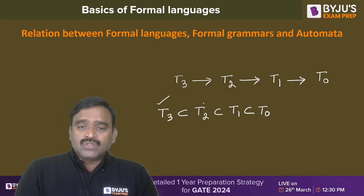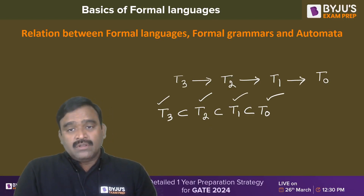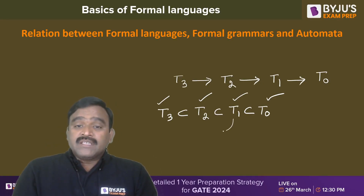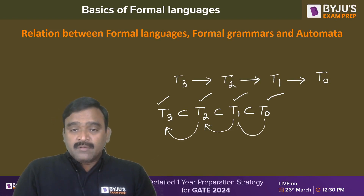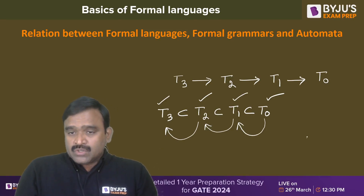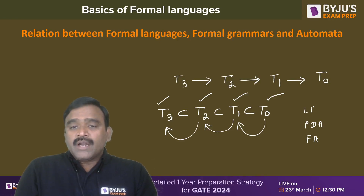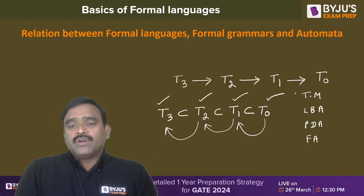Every regular language is also a context-free language, every context-free language is also context-sensitive, and every context-sensitive is also recursively enumerable — but not vice versa. Context-sensitive languages need not be context-free, and context-free languages need not be regular. The recognition capability follows this hierarchy: finite automata recognizes regular languages, pushdown automata is more powerful, linear bounded automata is more powerful than pushdown automata, and Turing machine is the most powerful.